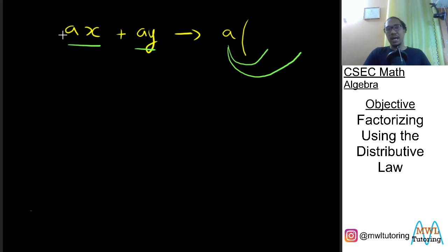Now if I want to get back ax then I need to multiply a simply by x. If I want to get back positive ay then I need to multiply a by positive y. And there you have it we've successfully factorized this expression here.